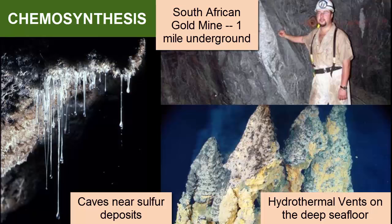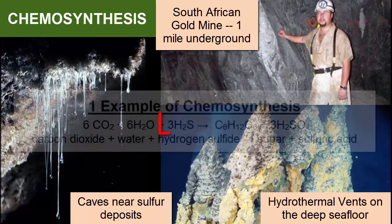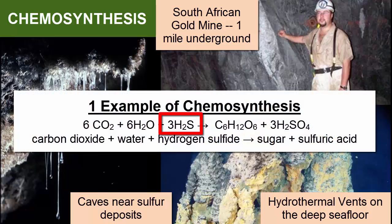We see chemosynthesis happening today in a number of dark locations, including deep in underground mines, at the bottom of the seafloor where gases seep out of cracks and sediments, and in caves near sulfur-rich mineral deposits. In all these locations, autotrophs use energy to combine surrounding ingredients and form sugars.